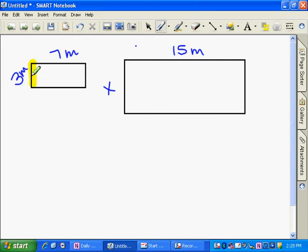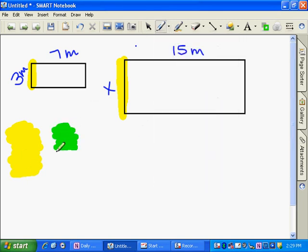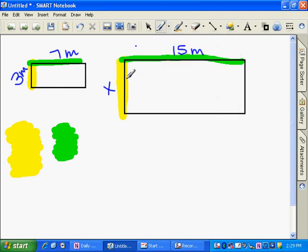So for example, this side is 3 meters, this side is x. And then this side is 7, and this side is 15. So these are the two sides that correspond to each other. The reason I did that is because it really helps me setting up a proportion to find out what this missing length is right here.